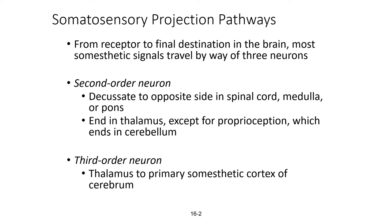Second order neurons typically cross over to the opposite side in the spinal cord from where they synapsed with the first order neuron — that's called decussation. The second order neuron typically decussates within the spinal cord, or in the case of signals from the head, within the medulla or pons. That neuron ends in the thalamus, except for neurons involved in proprioception, which end in the cerebellum. Proprioception is the term for sensing body position in space, concentrated in tendons, ligaments, and connective tissue. The third order neuron travels from the thalamus to the primary somesthetic cortex of the cerebrum.